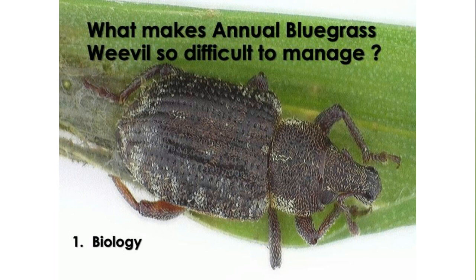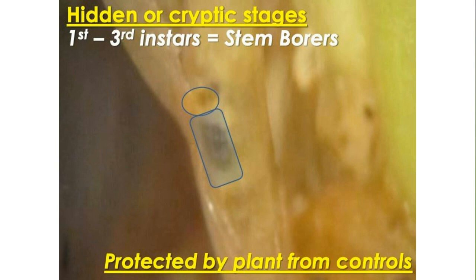It is important to discuss some of the factors that make annual bluegrass weevil a really difficult pest and the primary pest we work on in my laboratory. I think it is important to set the stage as far as how Soprato works and where it can be integrated. Out of all the insect pests we work on, this one is by far the most challenging based on its biology. The adult is a very important stage to control, and in general, adult beetles are very difficult to control — they're like little tanks.